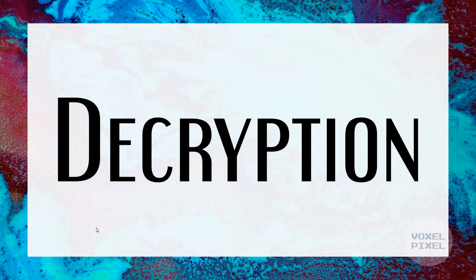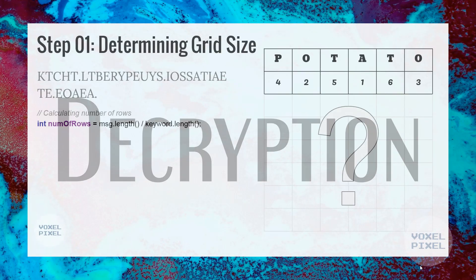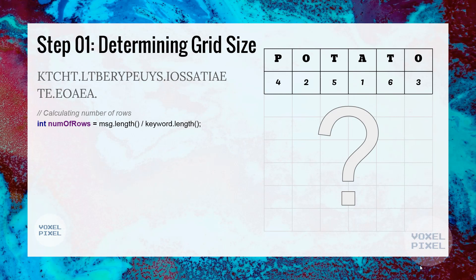Now, let's check out decryption process. Next, we will determine size of the grid. For that, we will first calculate the number of rows and we can obtain that by length of the message divided by length of the keyword.